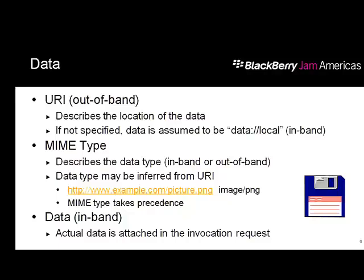MIME type is also very important — it describes what kind of data is contained by that file. For some files like PNG, the invocation framework already knows the MIME type. If you skip the MIME type parameter, the invocation framework will try to guess by looking at the file extension, but it could be wrong. If you want to enforce a specific MIME type for your invocation, you can do that by specifying it explicitly.